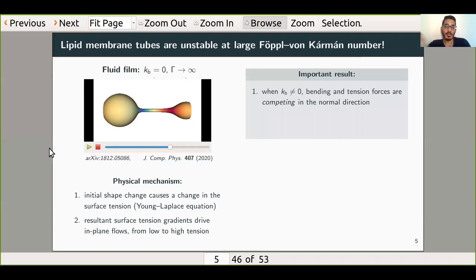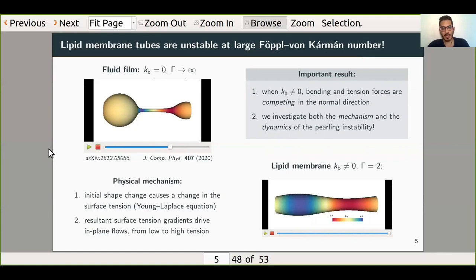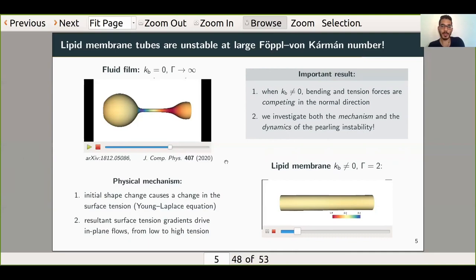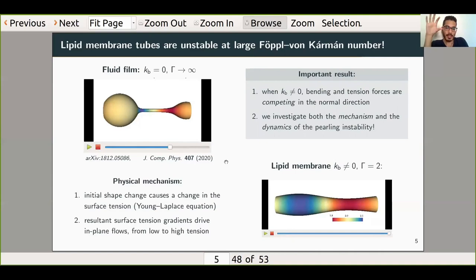I can also do the same analysis when there is bending modulus. Now I'm talking about a lipid membrane rather than a soap bubble. In this case, the bending forces and the tension forces are competing against one another. But it turns out that we can investigate the dynamics of this pearling instability even for the membrane. In this particular example, the first thing you'll notice is that the instability is much slower to propagate. The reason is because the bending force is competing with the tension, making it harder for that tension to pull on the lipids and have the instability grow. You'll also notice that the membrane doesn't pinch as much as the fluid film. The reason being that as the radius gets smaller, the bending forces become larger and eventually the shape arrests.